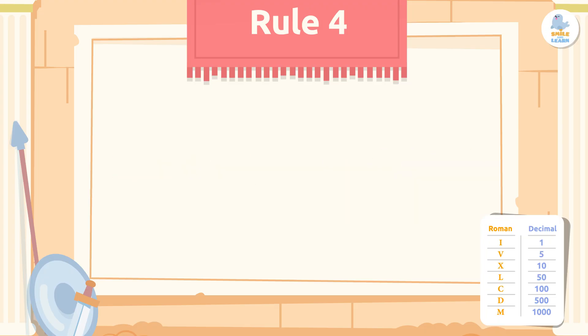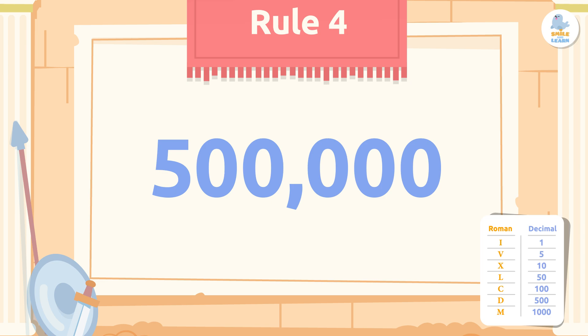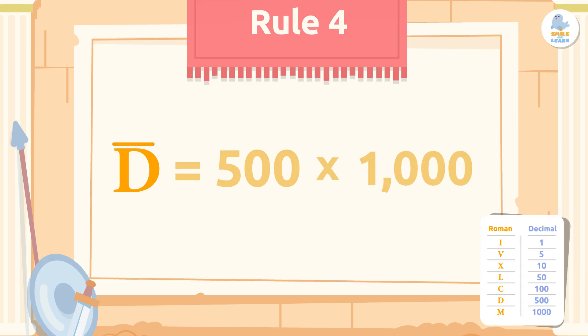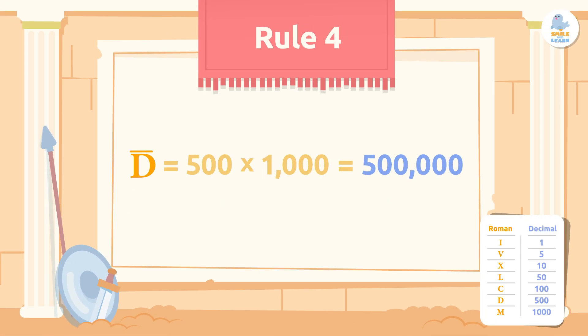Let's look at another example. How do you write the number 500,000 in Roman numerals? To form 500,000, we first put the letter D, which has a value of 500. Then we put a bar above it to mean times 1,000. Basically, we multiply the value of D by the value of the dash above it — that is, 500 times 1,000 — and we get 500,000!